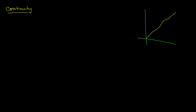Here's a formal definition of continuity. We say that f is continuous at a point a if the limit as x approaches a of f of x is equal to f of a. So what this means is that if we take a point on the graph, let's say a, then it should correspond to the point on the curve or the point on the function.